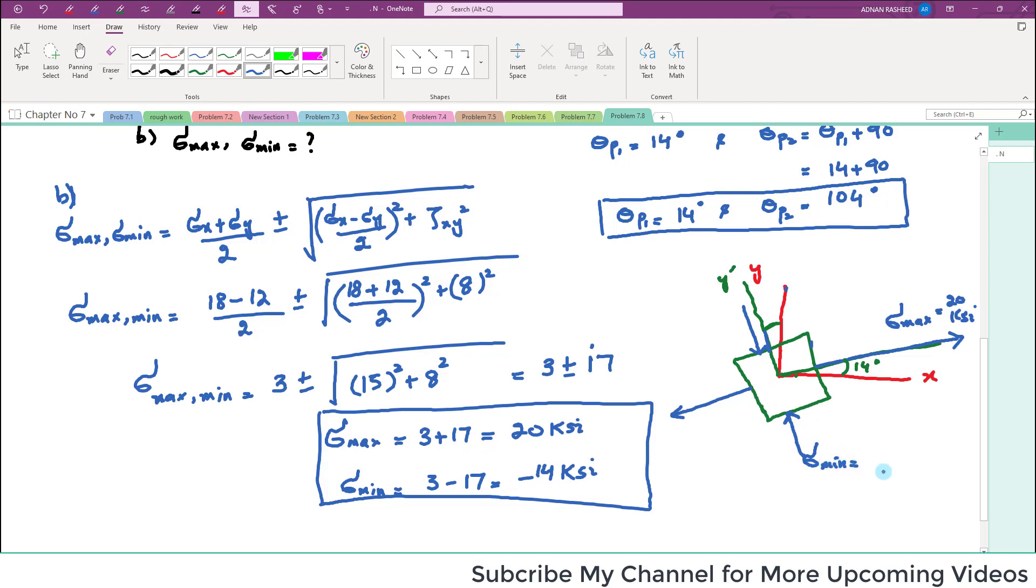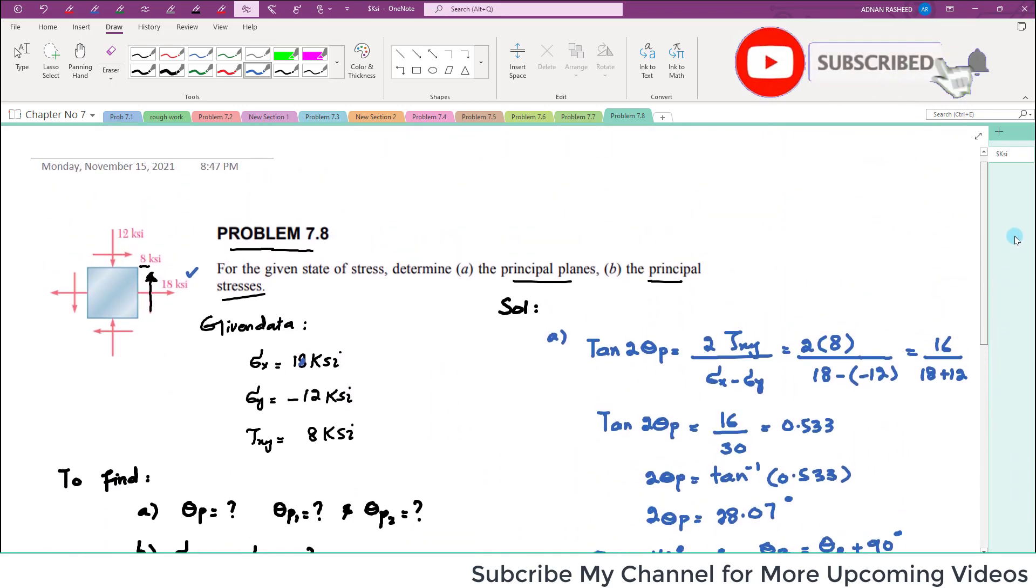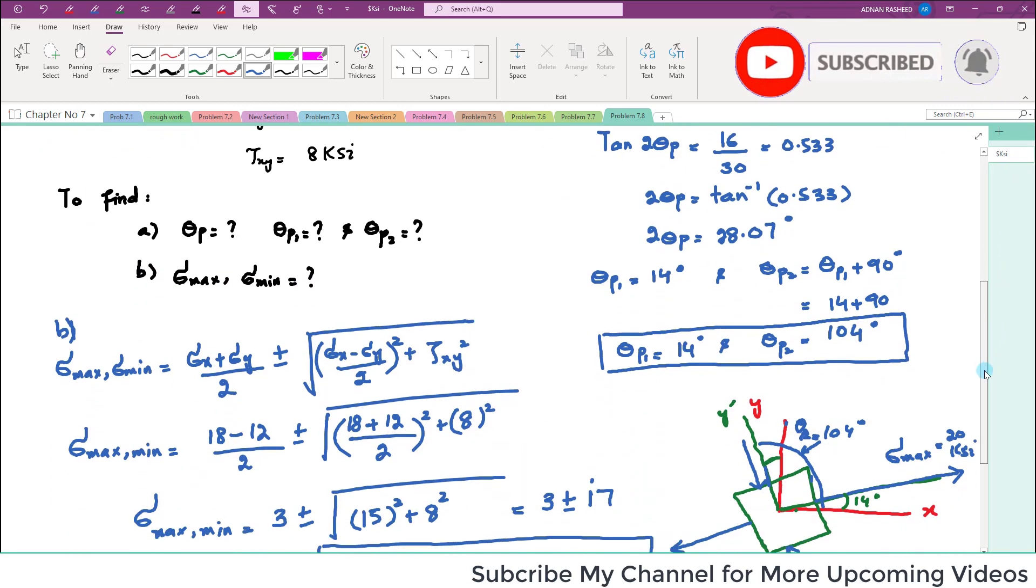Similarly, your sigma_min will be shown over here, that is minus 14. So it will be in compression, so you have to represent it like that. This is sigma_min, and this sigma_min is equal to minus 14 ksi. This total angle is 104 degrees because this is 90 and this is 14. This is theta_p2 and this is theta_p1.